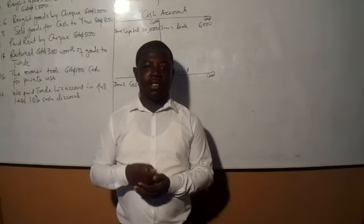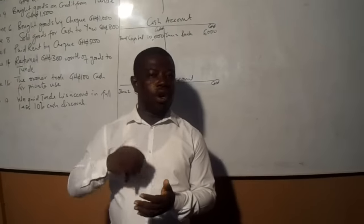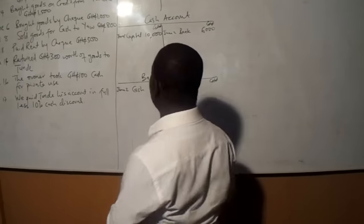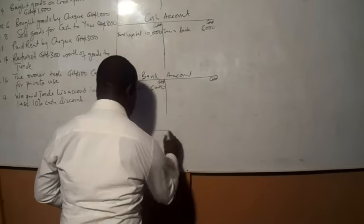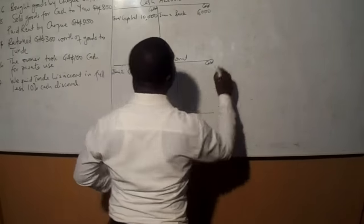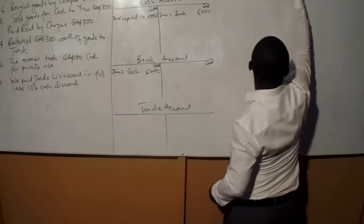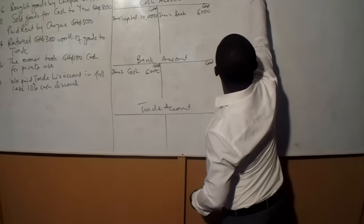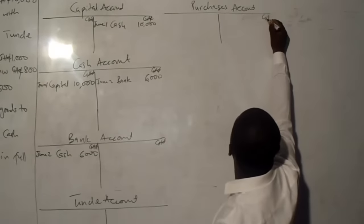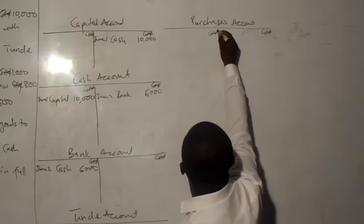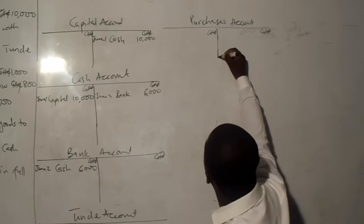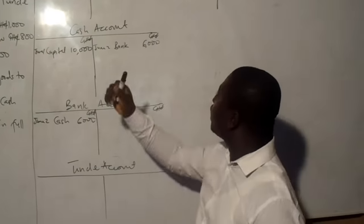Personal accounts are accounts of debtors and creditors alone. If it is not on credit, we do not open a personal account. Because it is on credit, we are going to open Tunde's account and purchases account. The next step is to find out which account to debit and which account to credit.